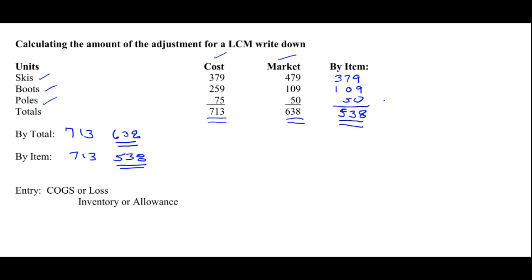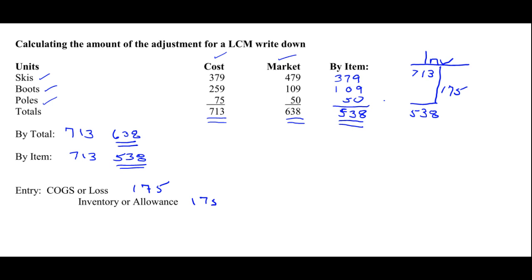Let's assume that we did it by item. We have an inventory account, and the balance in that account is currently $713 because no adjustment has been made. The lower of cost or market adjustment says we need to write it down to $538, so it needs to be written down by $175. You could debit cost of goods sold or a loss on inventory holding account for $175, and either credit inventory directly or set up an allowance to write inventory down to the lower of cost or market for the credit, picking up the other $175.